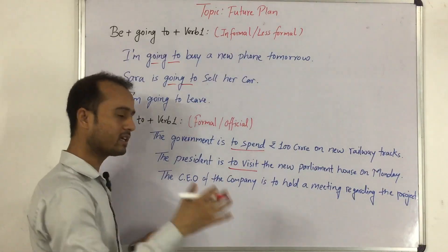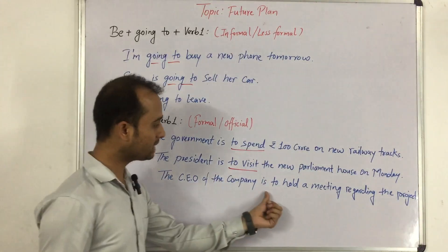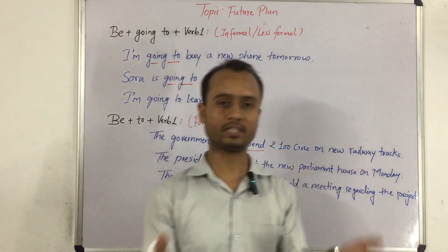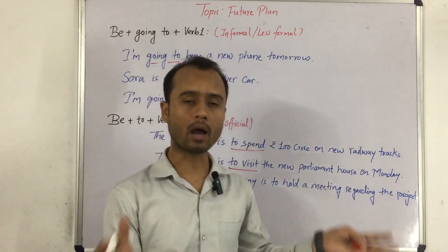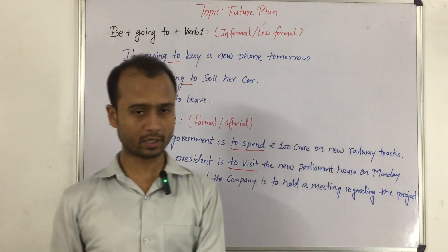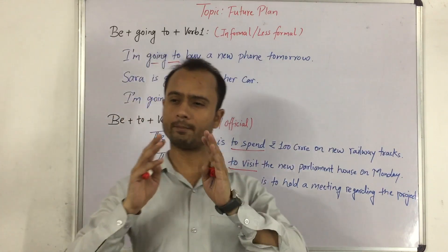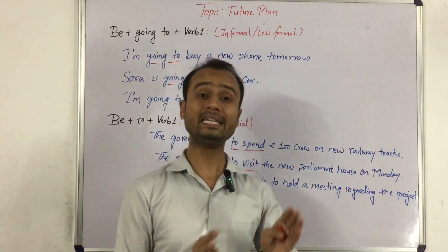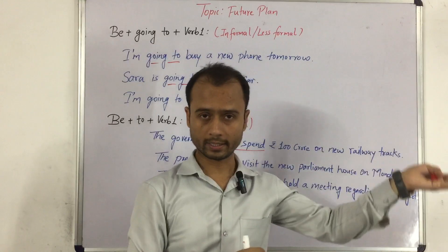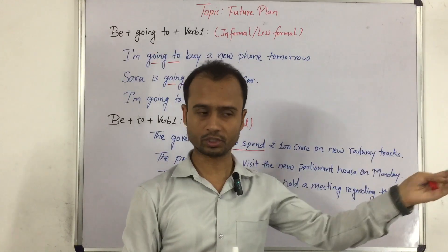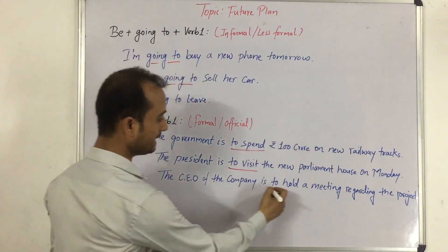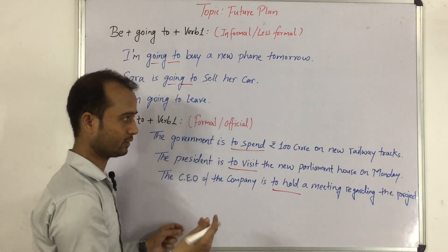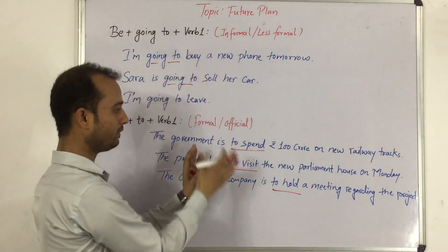The last example: 'The CEO of the company is to hold a meeting regarding the new project.' Company ka jo CEO hai, wo naye project ke sambandh mein meeting karne wala hai, karne ko hai — something like that in future. Again, you cannot see 'going to' here — 'going to' nahi use karte. So this is the difference between these two types of sentences.